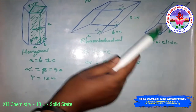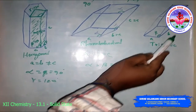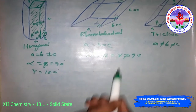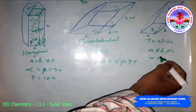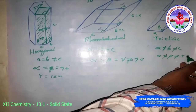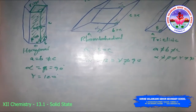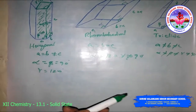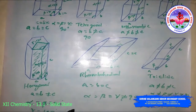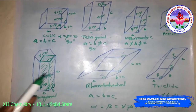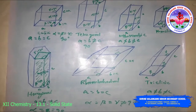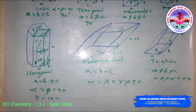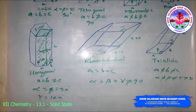The triclinic crystal system also has only one possible variation: primitive. All edge lengths are different: A ≠ B ≠ C. All angles are also different: alpha ≠ beta ≠ gamma, and none equal 90°. Examples include potassium dichromate and copper sulfate pentahydrate.